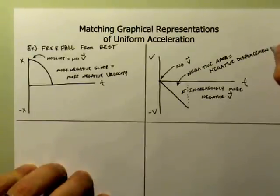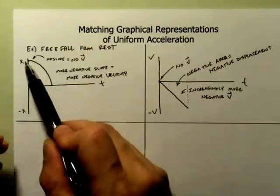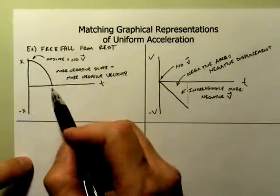Let's go back to the position time graph and see if that actually looks like that's the case. I started up here at a high value. Let's say this value was 25. I ended up down here on the ground.